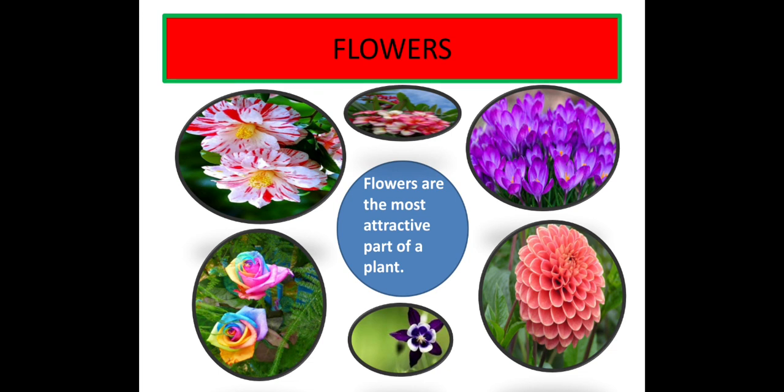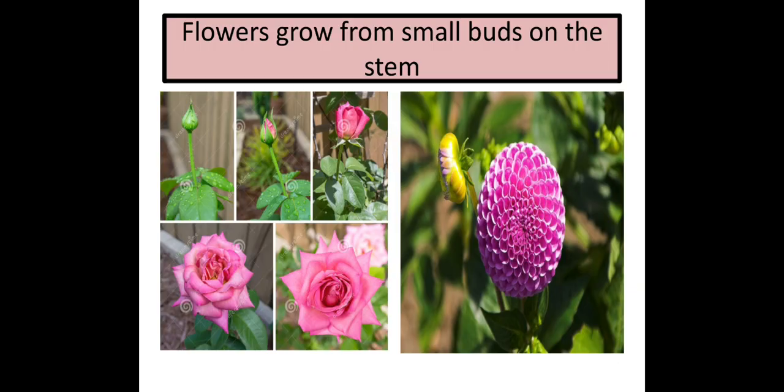But yeh flowers bloom kaise hote hai? Blossom kaise hote hai? A bud changes into a flower. Flowers grow from small buds on the stem. Stem pa jo small bud lagti hai, after few days it turns into a flower. When the bud gets proper air, sunlight and food - food jo leaves ne banaya tha.